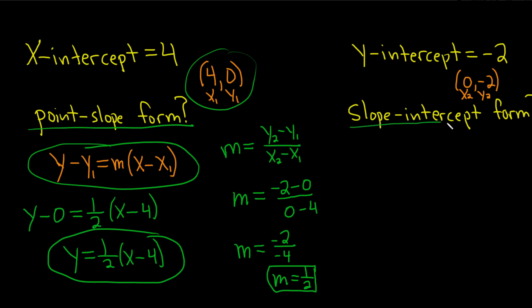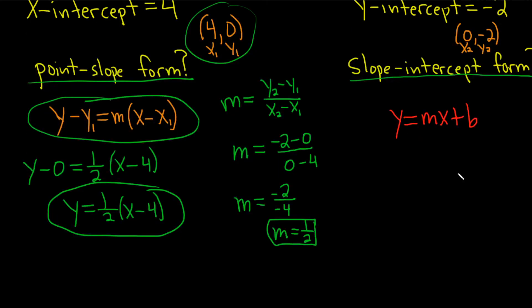Now for the slope-intercept form, that's different. The slope-intercept form is this one: y equals mx plus b. That's the slope-intercept form, and that basically means you solve for y. Well, we've already solved for y, so we just have to simplify.